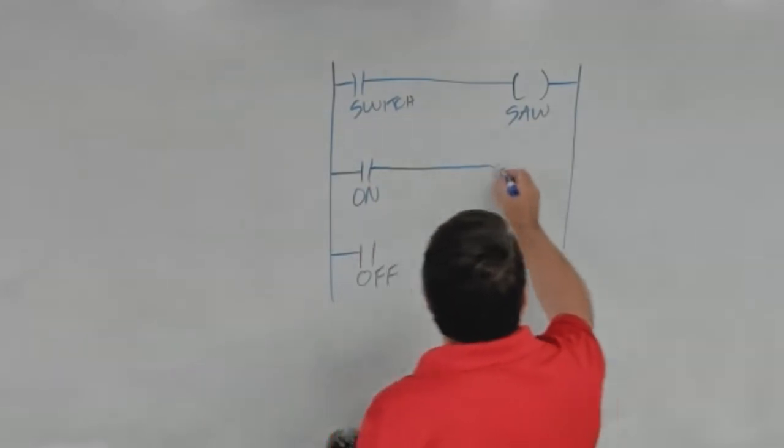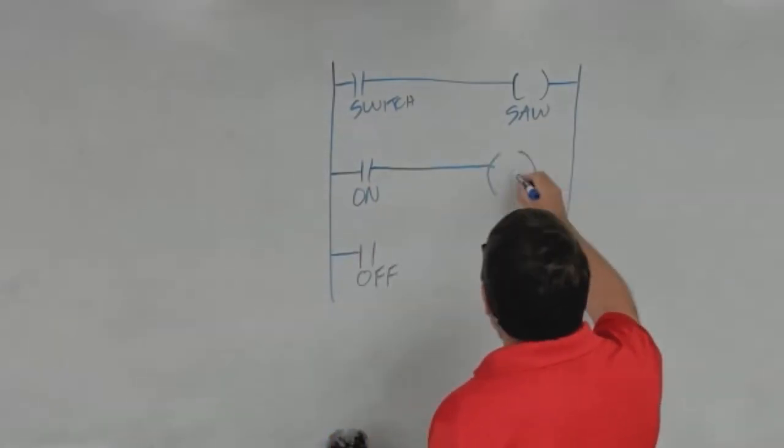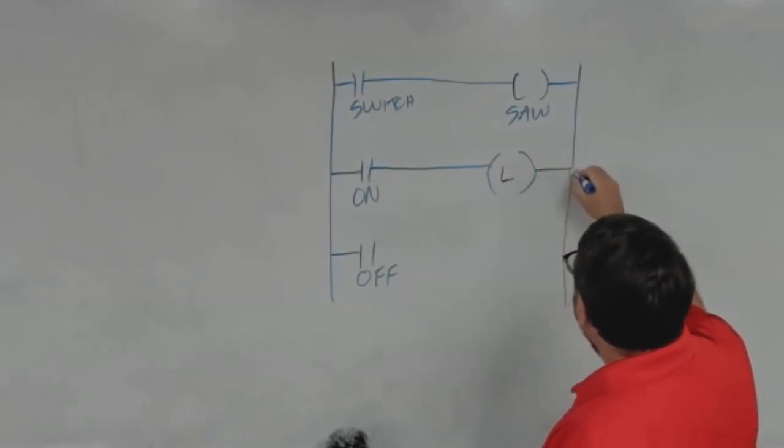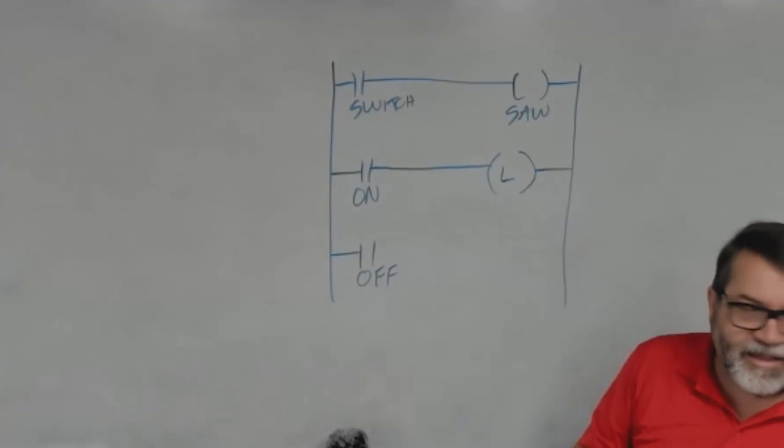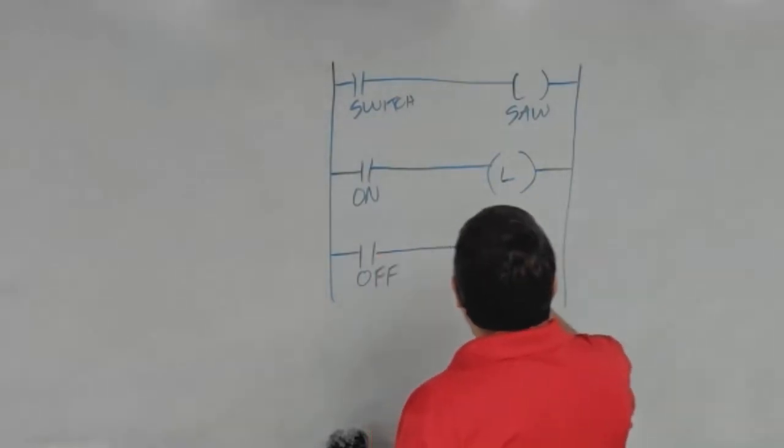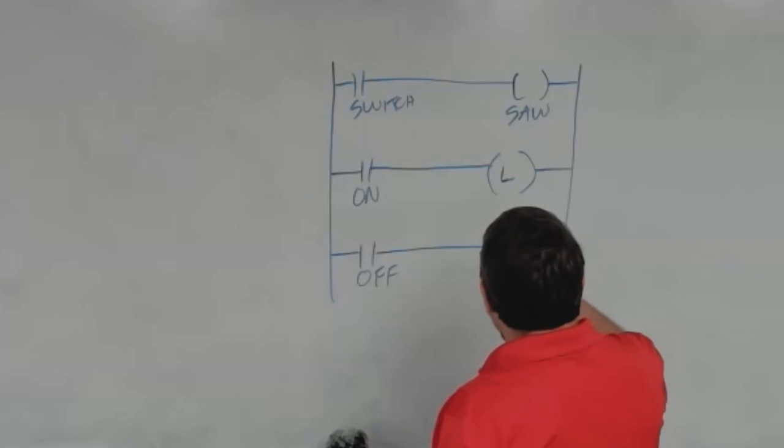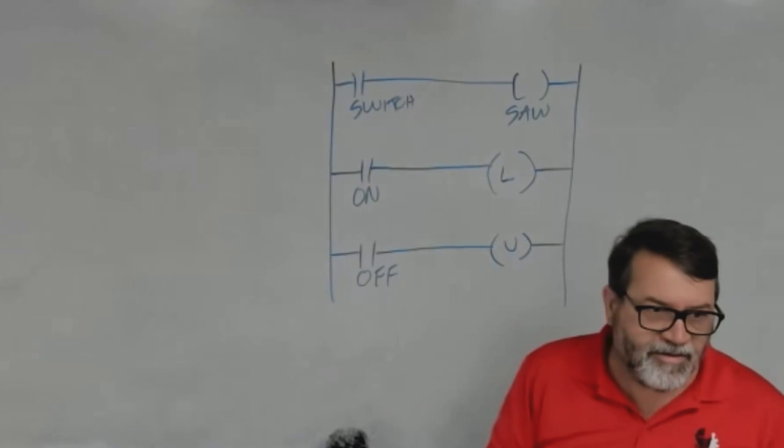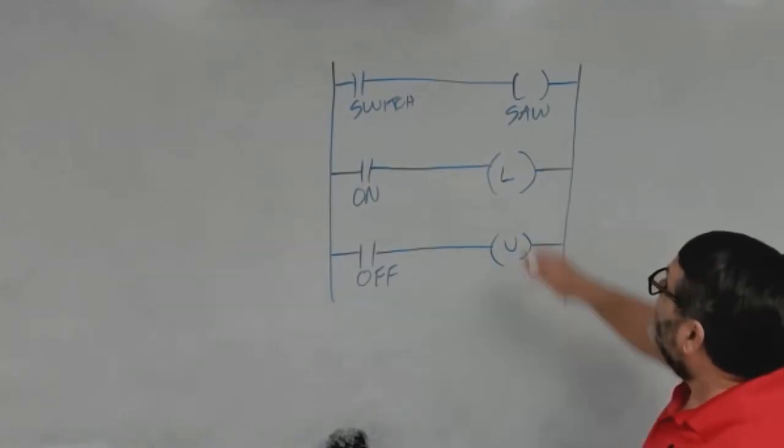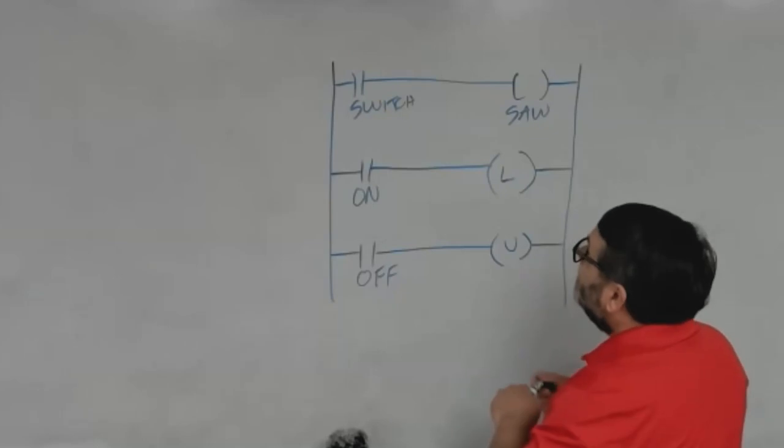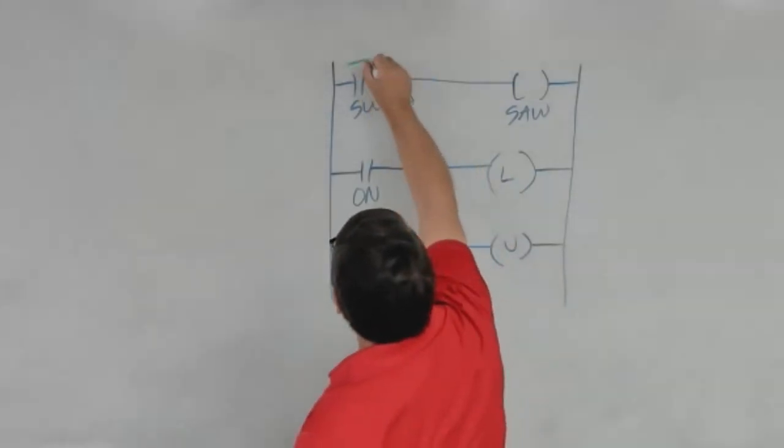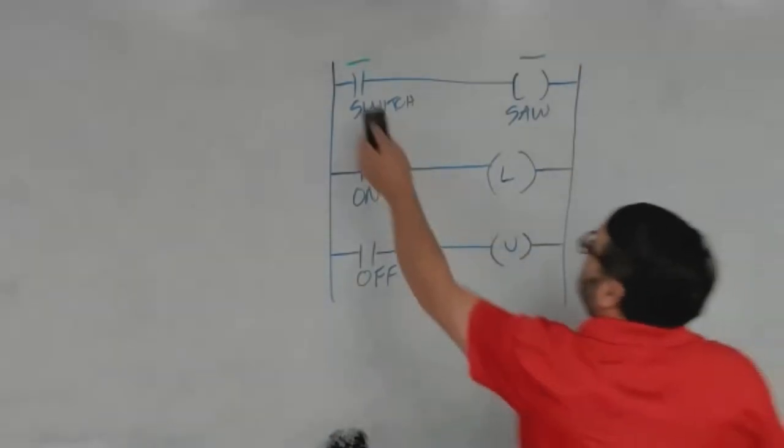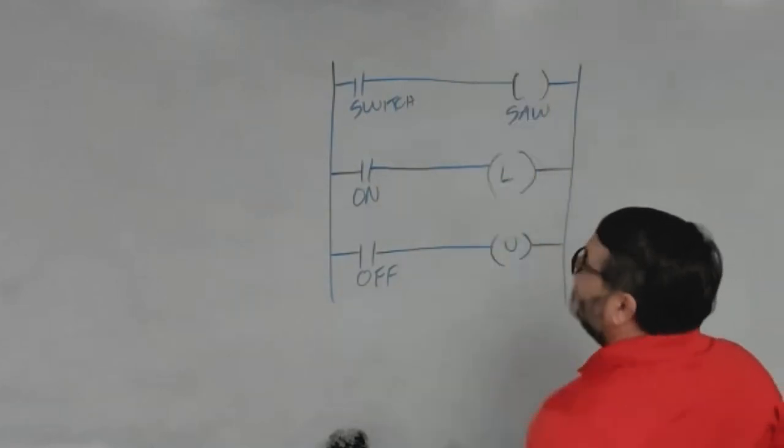I want a separate on and off button for my air conditioning system. To do it, it's pretty simple. For my on, I'm going to use a special kind of output called a latch, and it's just got an L on it. And then for my off, I'm going to use a partner output called an unlatch. With my top one, when I turn on my switch, my saw will come on. And when I turn off my switch, my saw goes off. So it's a very simple controller.